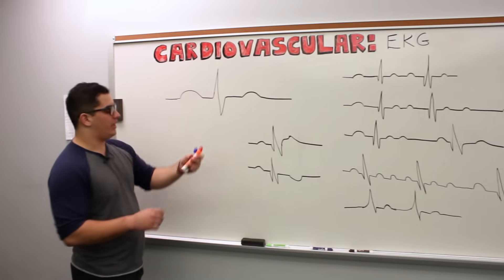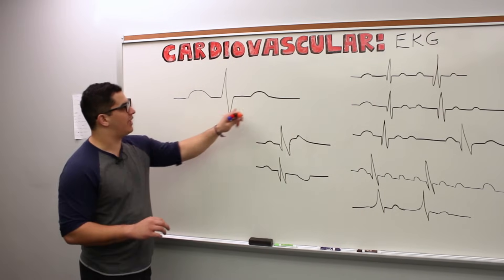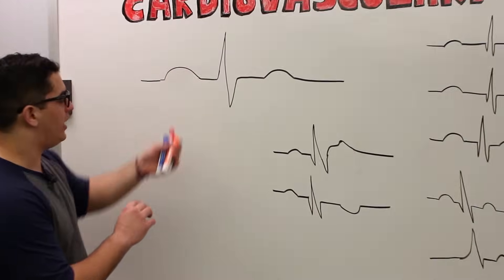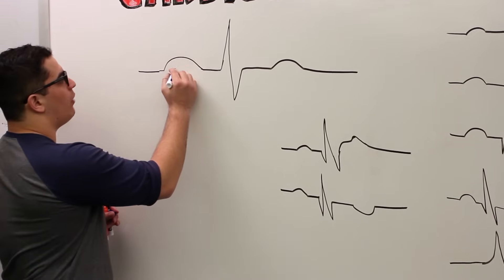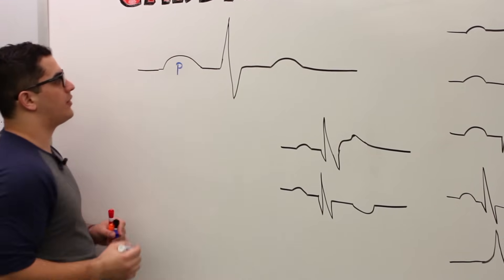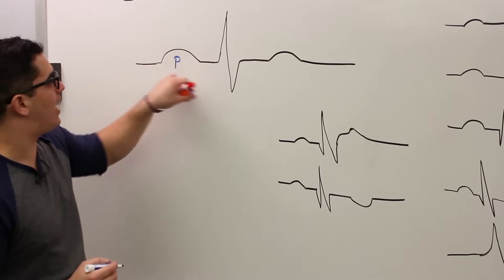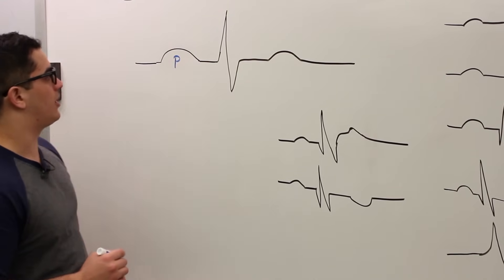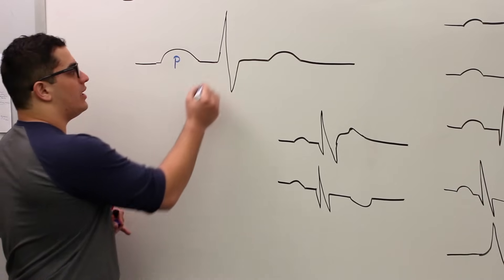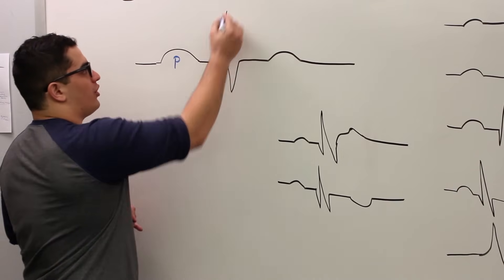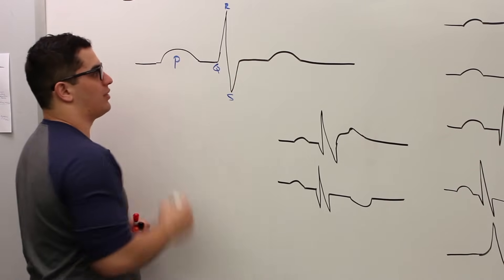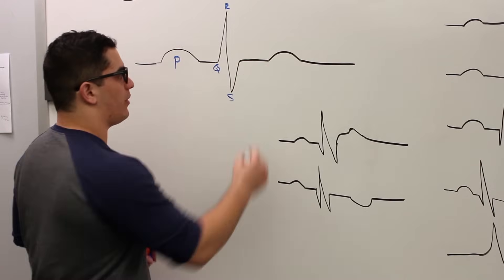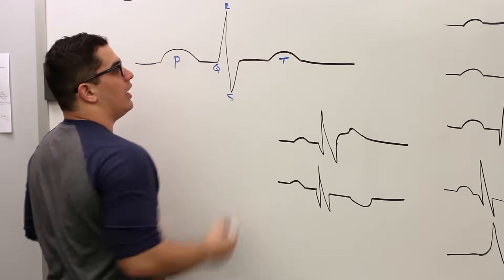If we look at the EKG, we have three distinguishable waves. This first one right here we refer to as the P wave. The P wave is this positive deflection from the isoelectric line. Then you might see this little negative deflection — that's your QRS wave. And then this last wave over here with this other positive deflection is the T wave.